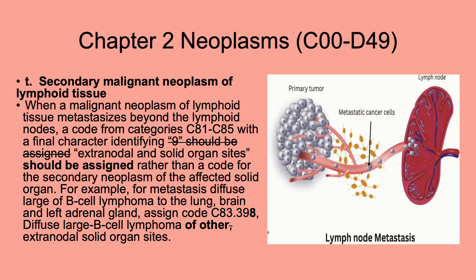Also in neoplasms, secondary malignant neoplasm of lymphoid tissue. Previously, when lymphoid tissue metastasizes beyond the lymph nodes, the guideline said to use a code from C81 to C85 with a final character of 9. They changed this — they removed that requirement for a final digit of 9 because it's not always going to be 9. For example, they added an example using a final digit of 8, code C83.398, for extranodal and solid organ sites. So don't assume it will always be a 9.